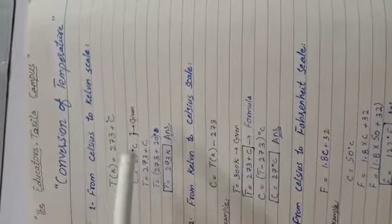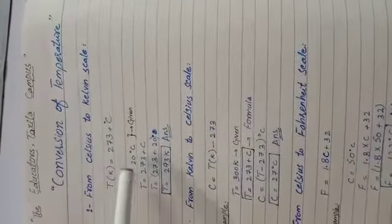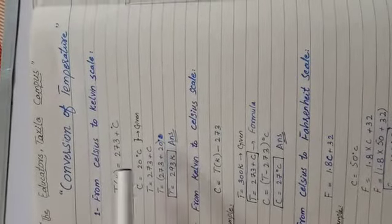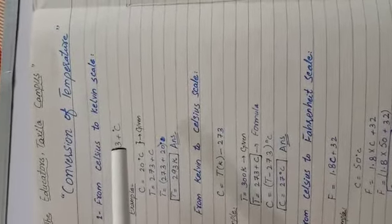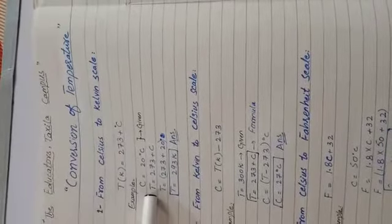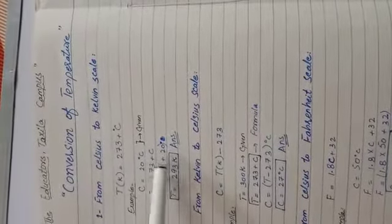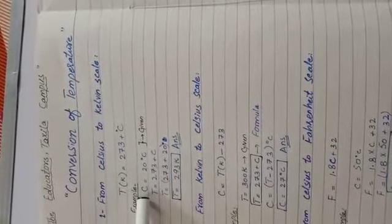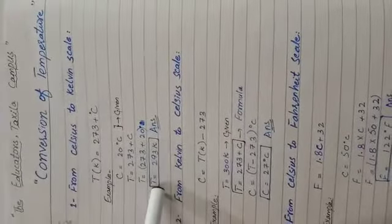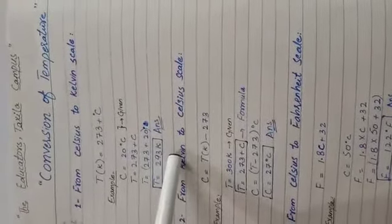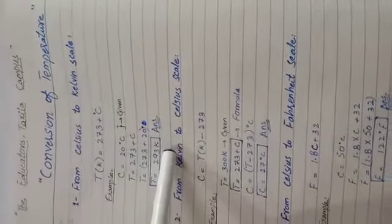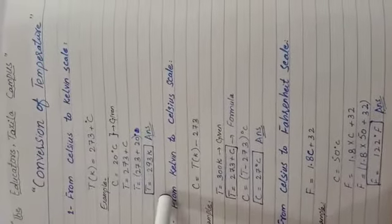For example, if the temperature given in Celsius is 20 degrees centigrade, you will use the formula: T (Kelvin) = 273 + C. You add the given temperature value to 273 and express the result in Kelvin. That is how you convert from Celsius to Kelvin.